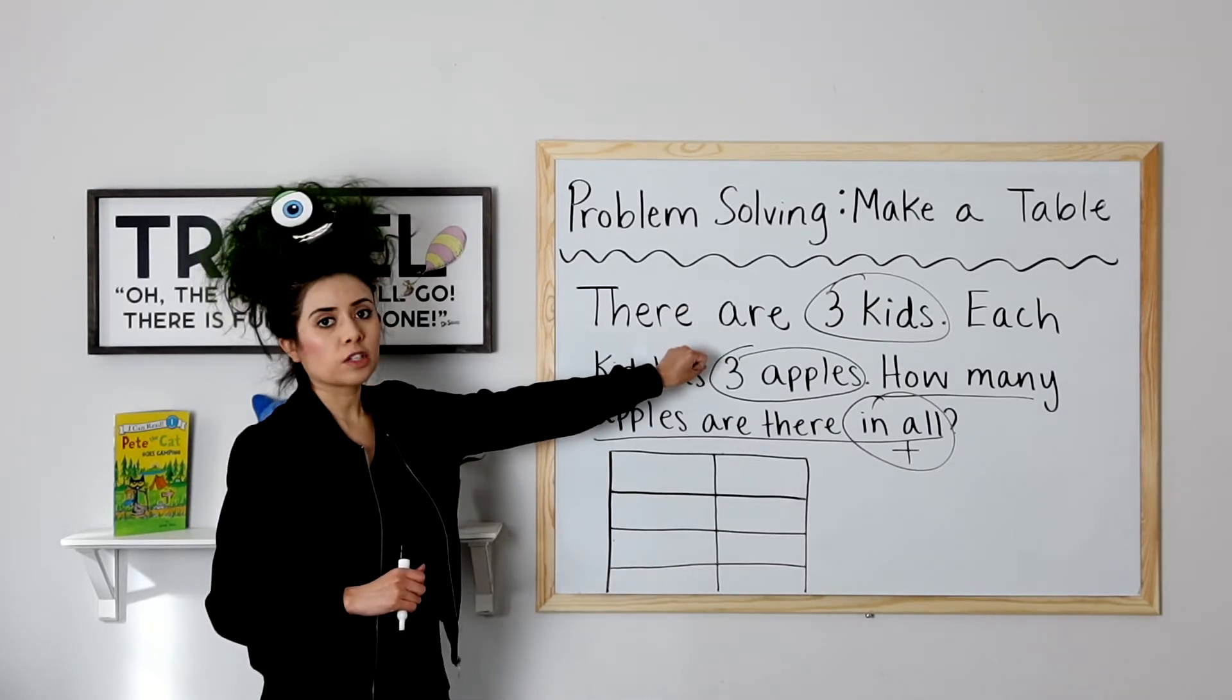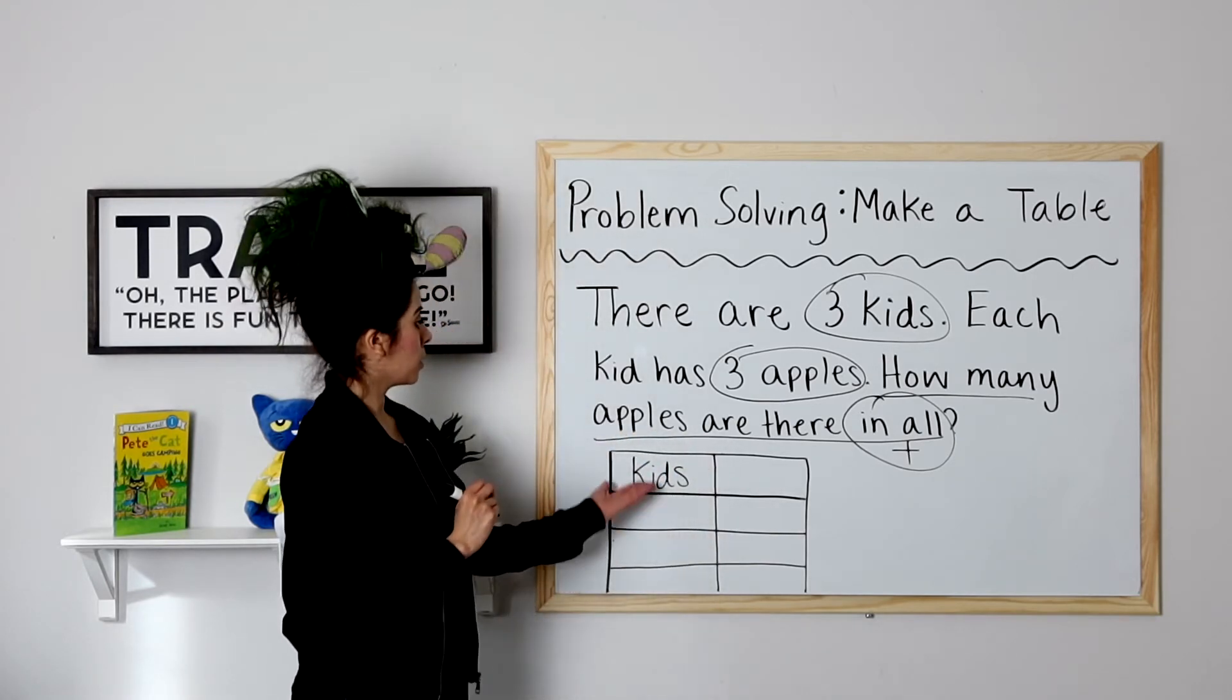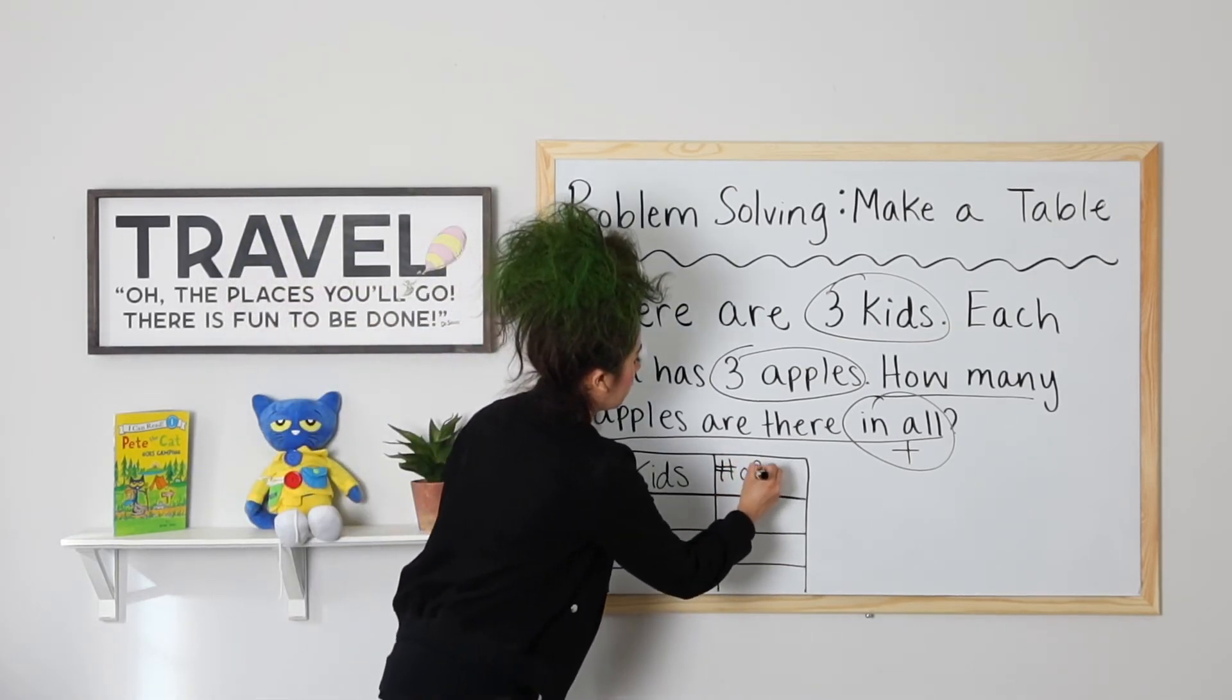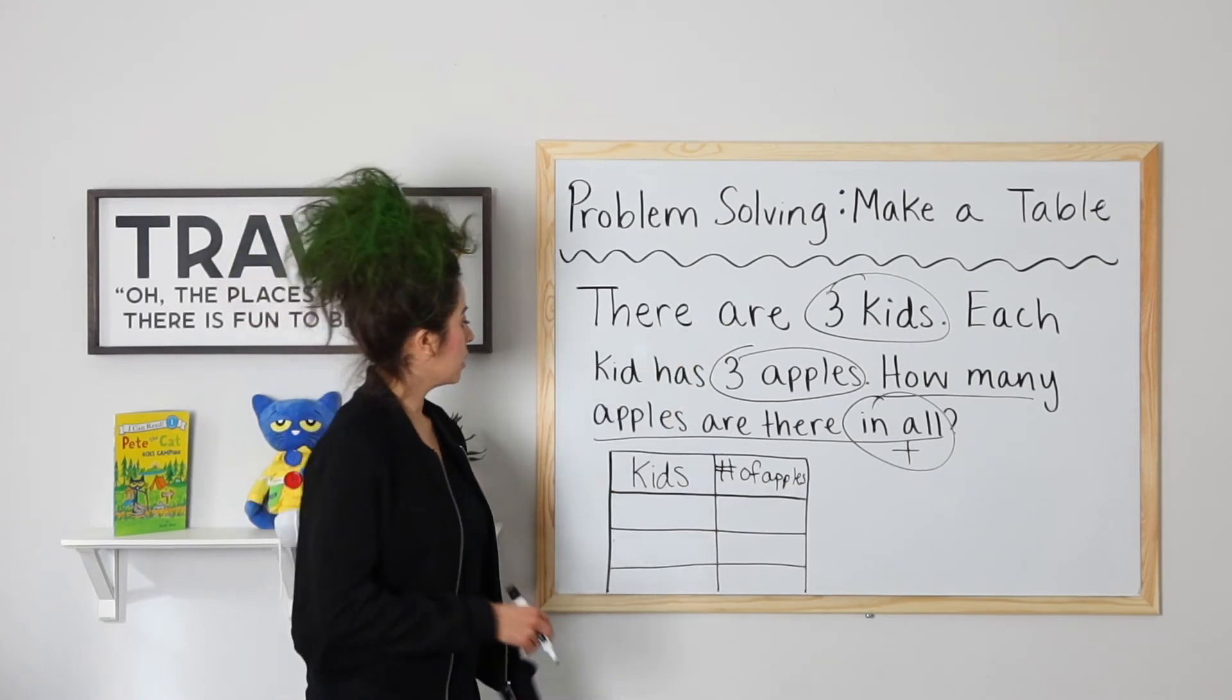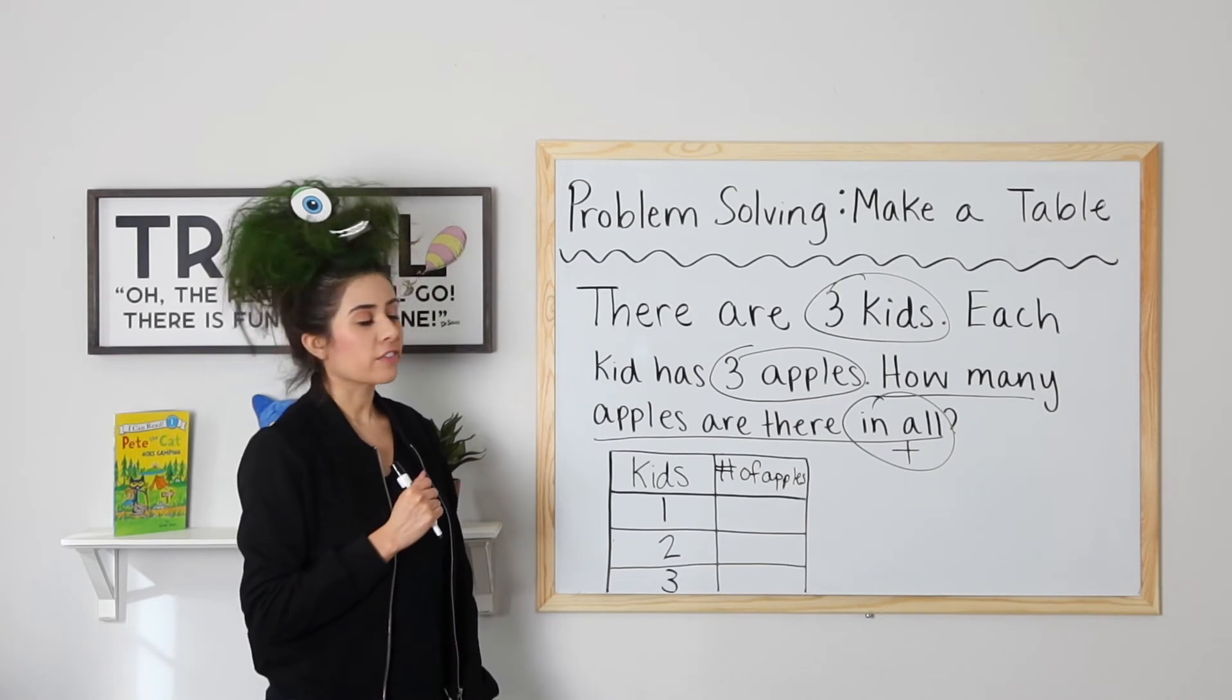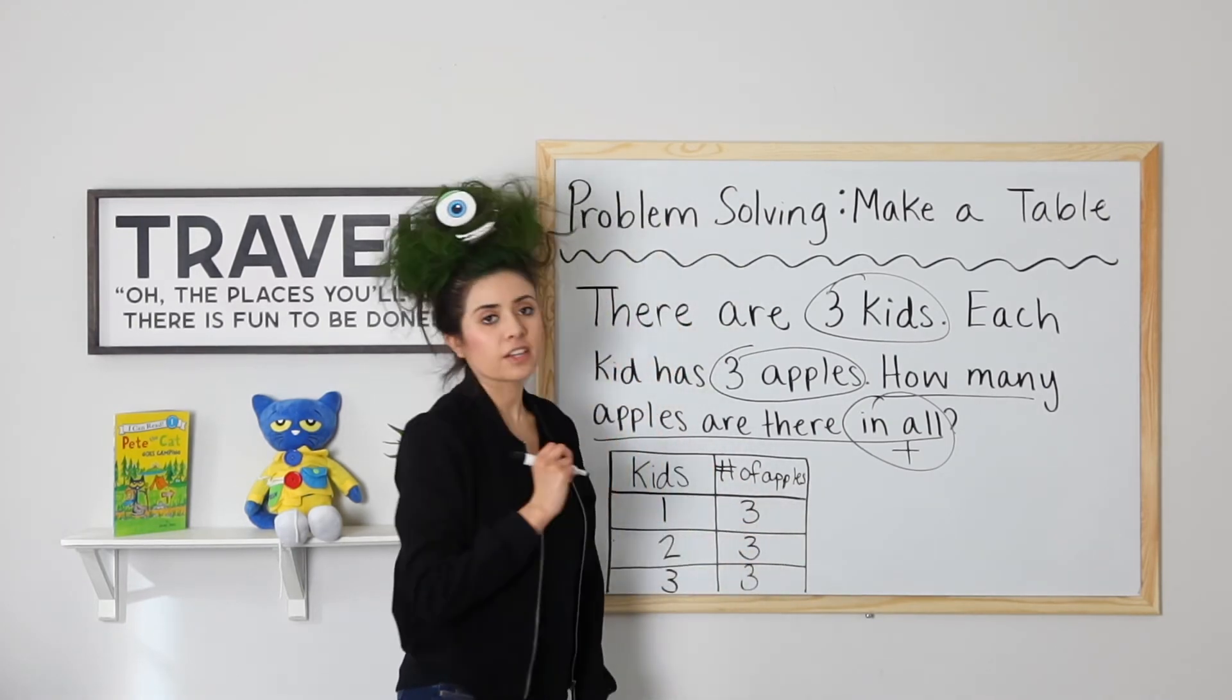Next step is to make a table to solve. I will take the information in my word problem and turn it into a table. So we know we're talking about kids. So I will label my first column with kids. We also know that they each have a certain number of apples. Number of apples. So how many kids are there? Three. So we'll go ahead and label kid one, kid two, and kid three. How many apples do they each have? Three. So three apples for kid one, three apples for kid two, and three apples for kid three. Very good.